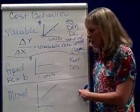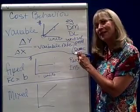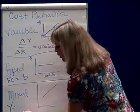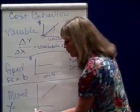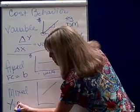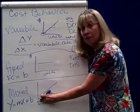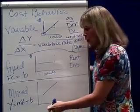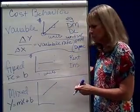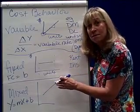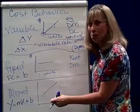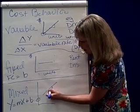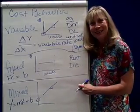The last kind of cost we're going to talk about is a mixed cost. A mixed cost has a little bit of fixed and a little bit of variable. To come up with a formula, it's Y — total cost — is equal to MX plus B, where B is the fixed component, M is the variable rate or slope, and X is the activity level. I bet you've seen this formula before. It graphs starting where it hits the y-axis as the fixed component, and you can still find the slope for the variable rate.